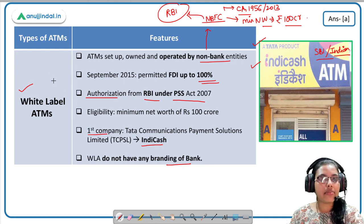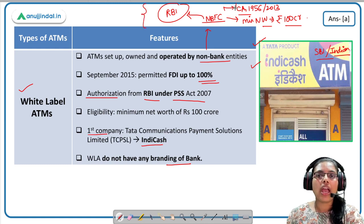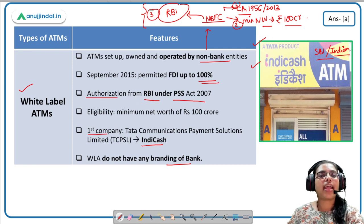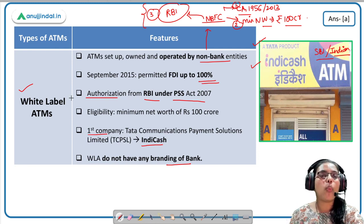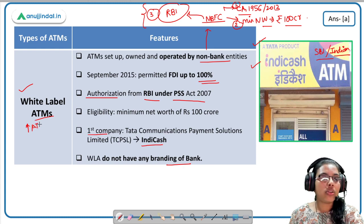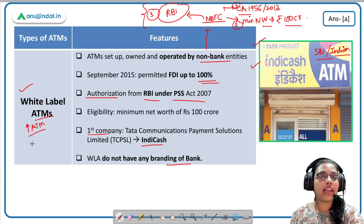To recap: White Label ATMs are owned and operated by NBFCs. The eligibility criteria are: first, it has to be a registered company under the Companies Act; second, it should have a minimum net worth of ₹100 crore; and third, it needs authorization from RBI under the PSS Act of 2007. RBI has also mandated non-bank finance companies to set up these ATMs in Tier 3 to Tier 6 cities compulsorily.